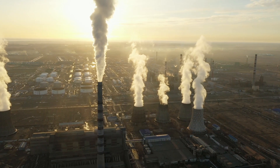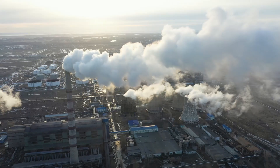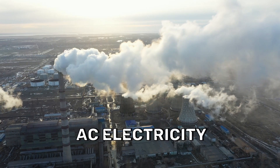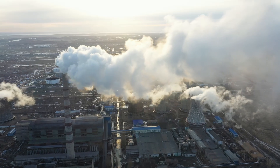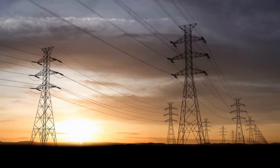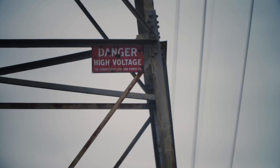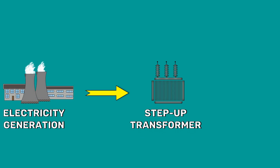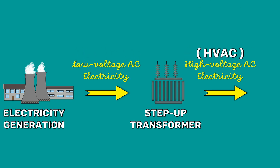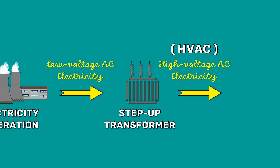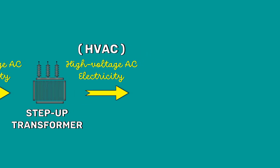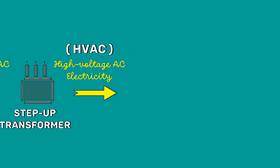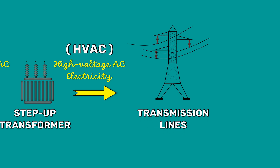Electricity is produced by large power plants. Most power plants generate AC electricity. To reduce the losses, electricity is transmitted at very high voltages. Therefore, the generated electricity is first delivered to the step-up transformer which converts the low voltage into high voltage. This high voltage AC electricity is then carried over long distances by the transmission lines.